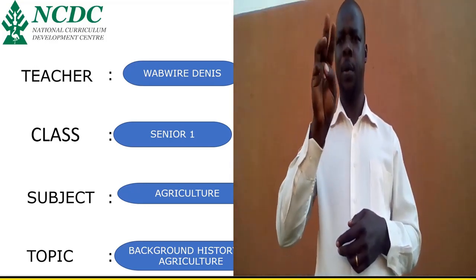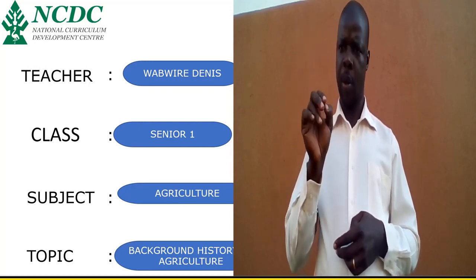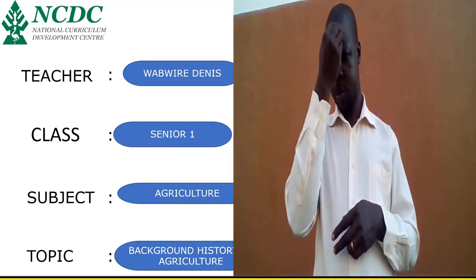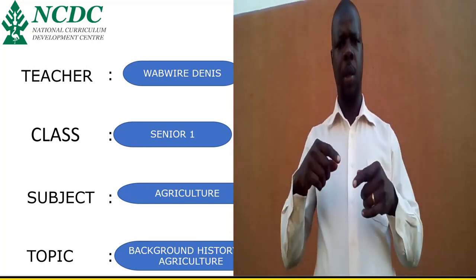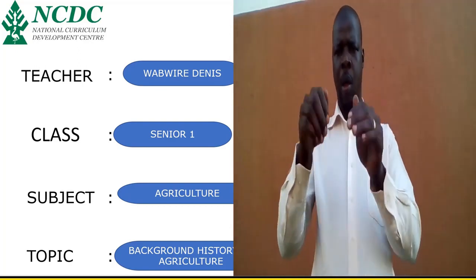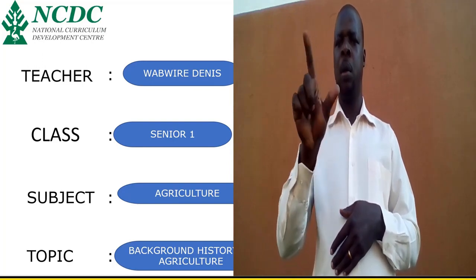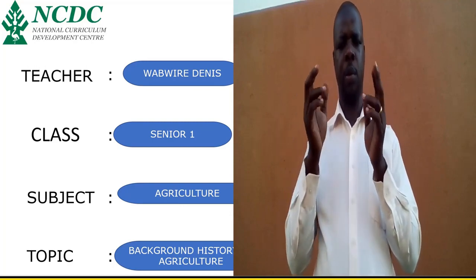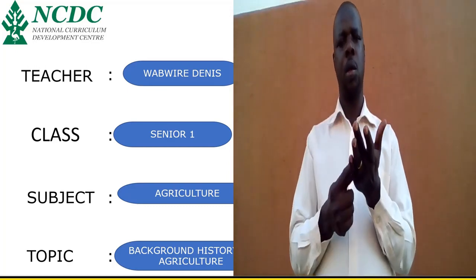My name is Wabuire Dennis. That is my sign name. I'm going to teach senior one class. The subject is agriculture — that is its sign, fingers crossed, agriculture. The topic today is the background history of agriculture in Uganda.